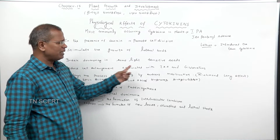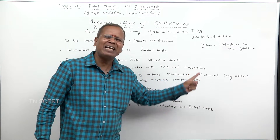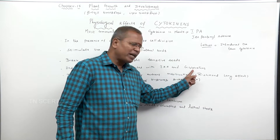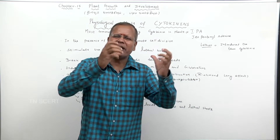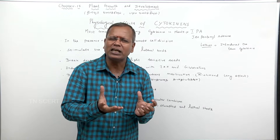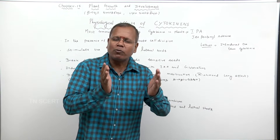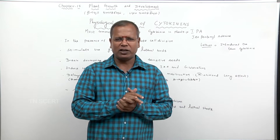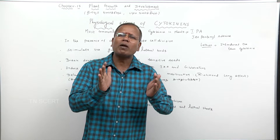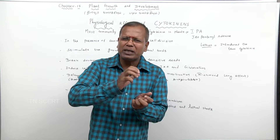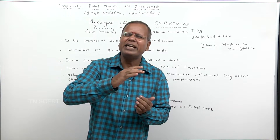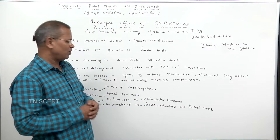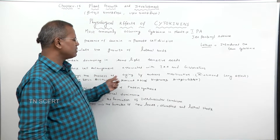Cytokinin induces cell enlargement associated with IAA and gibberellins. If the protoplasmic content of the cell is increased, it is called cell elongation.